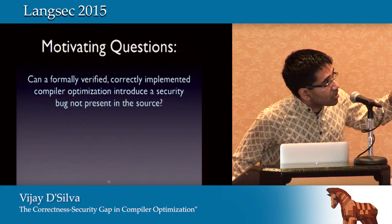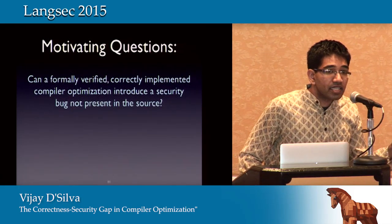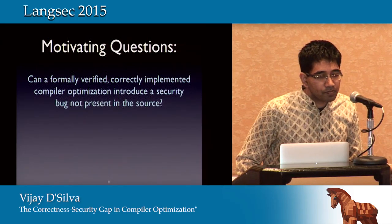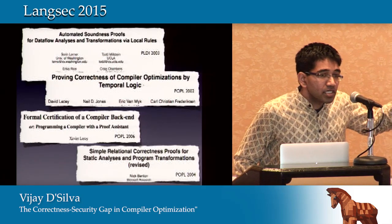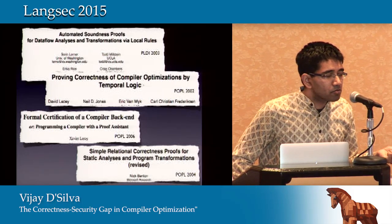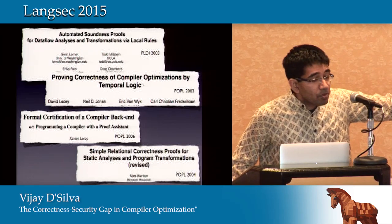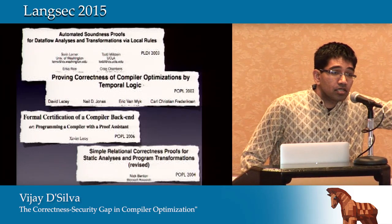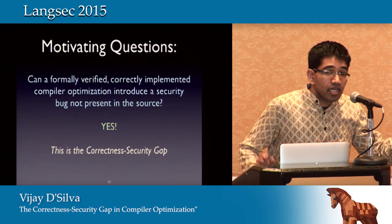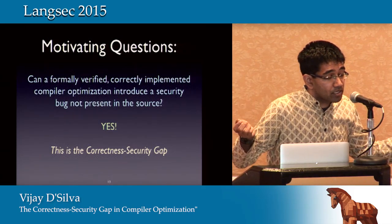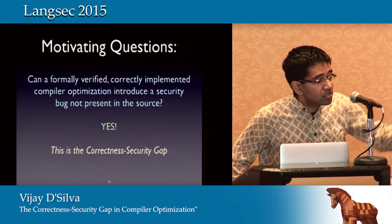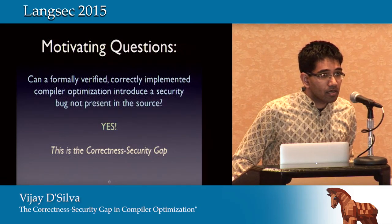More generally, we can ask: can a correctly designed and even correctly implemented compiler optimization violate a security guarantee you put in your code? Looking at the literature, it took a long time to have reusable techniques to prove correctness of compiler optimization. But in the last few years, papers give you correctness of the dead store elimination I mentioned. The answer is yes — we have an optimization that has been formally verified and correctly implemented, and it's clear that it violates some security guarantee. This is an instance of what we call the correctness-security gap.